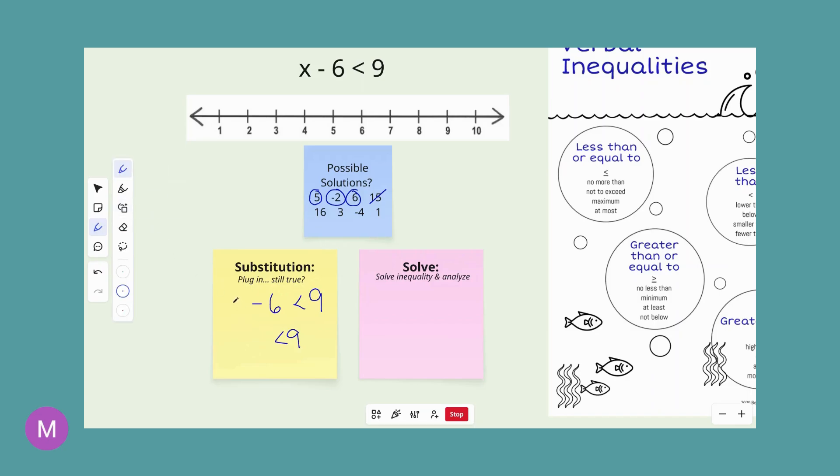Let's try the next one, 16. 16 minus 6 is 10. Is that less than 9? No. Let's keep going here. 3 minus 6 is negative 3. Is that less than 9? Yes, it is. Negative 4. Some of you might be spotting a pattern here. We have a party of negatives, so we're going to have negative 10. Is that less than 9? Yes, it is. And then last one, 1. 1 minus 6, I have a dollar, I want to buy something for 6, that's going to make me owe somebody $5. It is less than 9, so it is a solution as well.